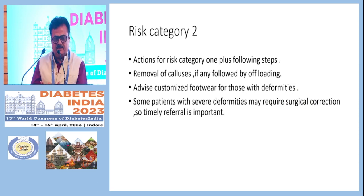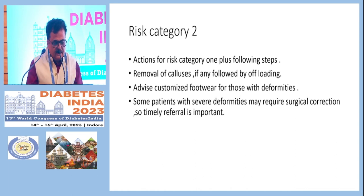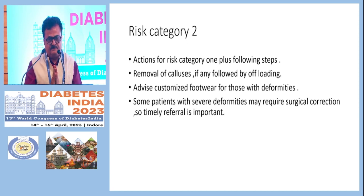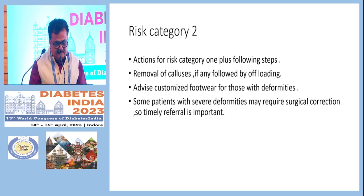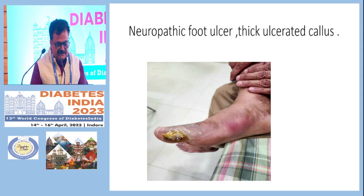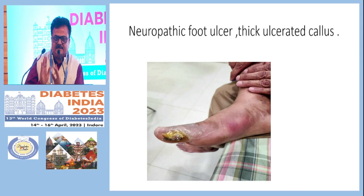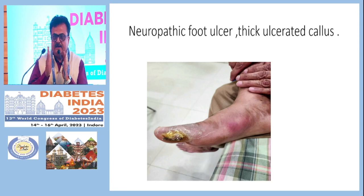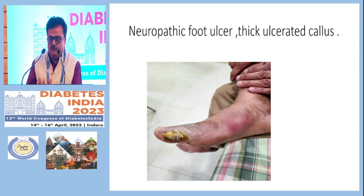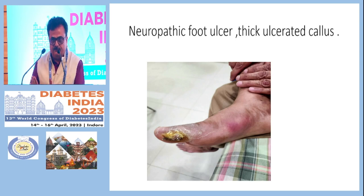For risk category 2: educate the patient, examine their feet, remove calluses followed by offloading footwear, and advise customized footwear for those with deformities. Some patients with severe deformities may require surgical correction before ulcers develop. Here is a recent photograph from my own clinic: this person had a thick callus on the great toe and had been using various dressings and antibiotics. Remember — diabetic foot ulcers and calluses do not heal with antibiotics or dressings; they heal with offloading. I removed the callus, applied moisturizer, and provided offloading footwear — it healed within one to two weeks.